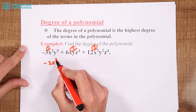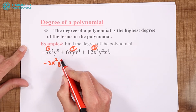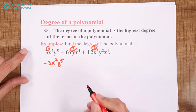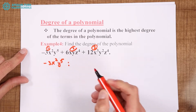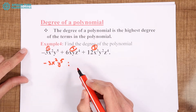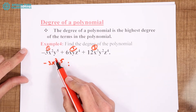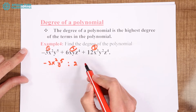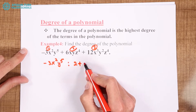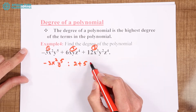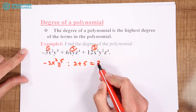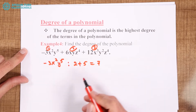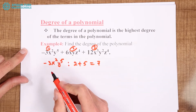x to the power of 2, y to the power of 5. So what will be the degree? The degree is the sum of the powers of the variables. In here we have 2, and also we have 5. 2 plus 5 is 7. So the first monomial has 7 as the degree.